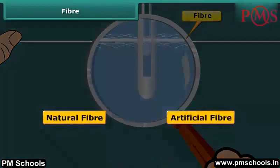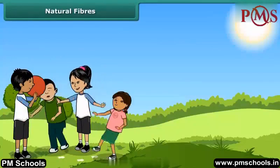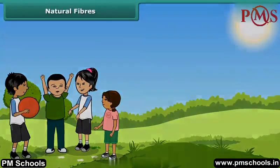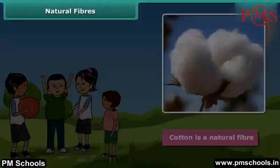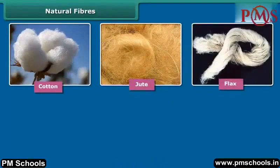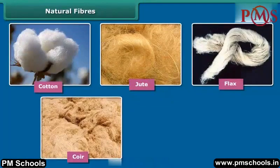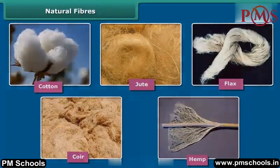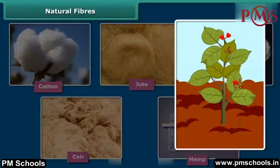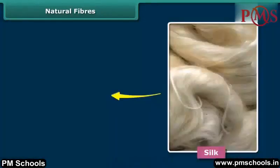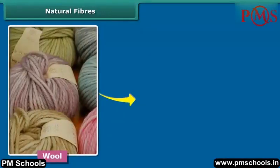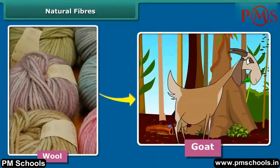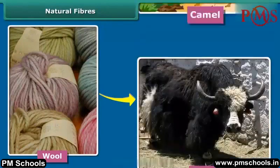Fibers can be both natural or artificial. You feel so comfortable when you wear cotton clothes in summer. Cotton is a natural fiber. Natural fibers like cotton, jute, flax, coir, hemp, etc. are obtained from plants. Silk fiber is drawn from the cocoon of silkworm. Wool is obtained from the hair of animals like sheep, goat, rabbit, yak and camel.